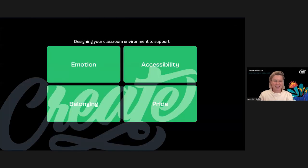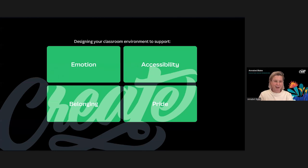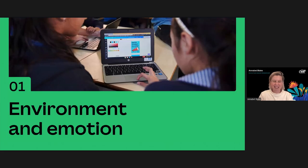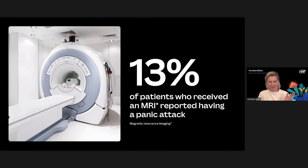Now we're going to explore some simple visual design tips, tricks, and Canva templates that will help you create a classroom environment where students feel confident and ready to learn, where materials are accessible, students have a strong sense of belonging, and the classroom community is singing with pride. First up: how the environment can play a powerful role in influencing emotions and how you can use it to create a classroom where everyone feels calm and confident.